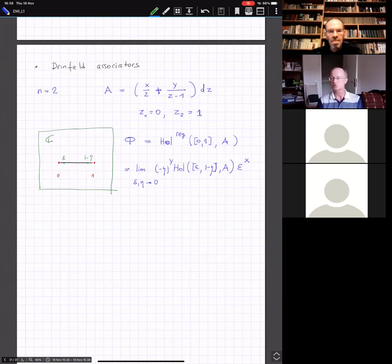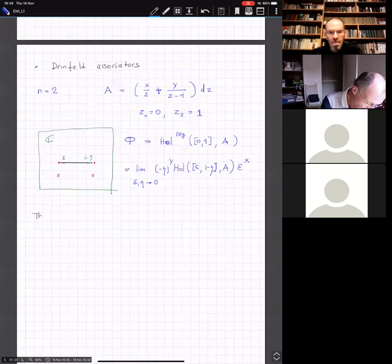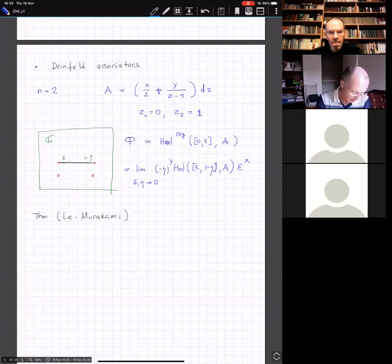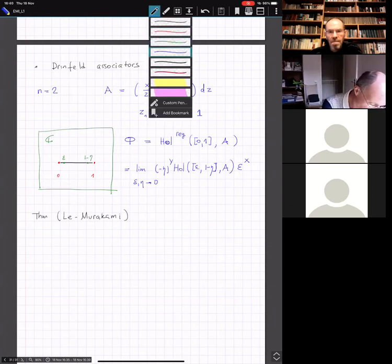Thanks. So what do we need to know about those Drinfeld associators? First of all, let me cite the theorem of Le and Murakami, which says the following. In fact, it gives a rather concrete formula for phi. So it's a sum. And here there will be coefficients which are denoted zeta of k1, kd. That's the sum over d and then on k1, kd.